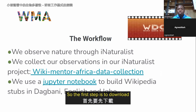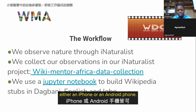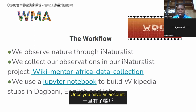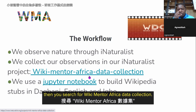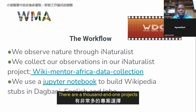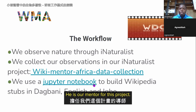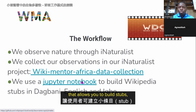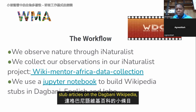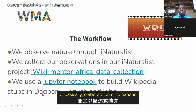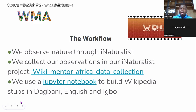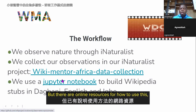The first step is to download the iNaturalist app on your phone. The next step is to create an account. Then make an observation and join other projects. You can search for the 'Wiki Mentor Africa Data Collection' project on the platform. Thanks to Andrew, a Jupyter Notebook has been created that allows you to build stub articles on the Igbo Wikipedia, English Wikipedia, and Eville Wikipedia. These stub articles are short articles that others can expand. Online resources are available to guide you.